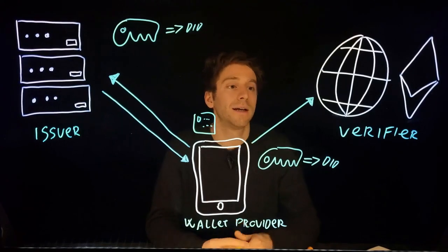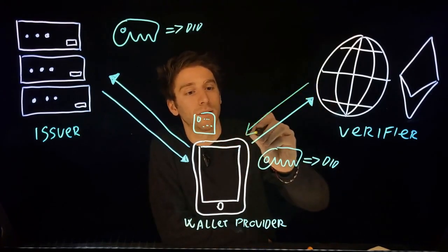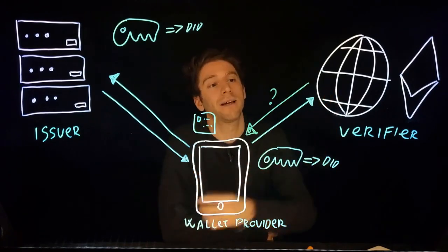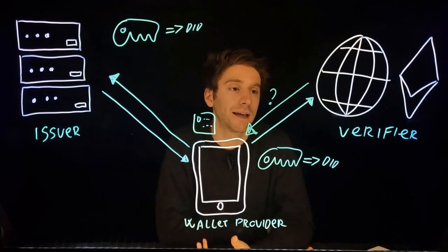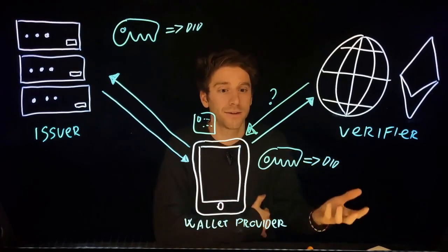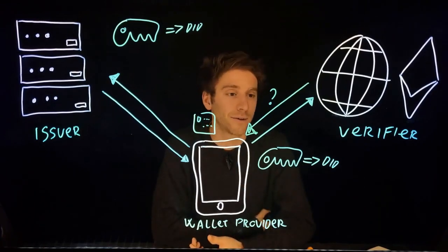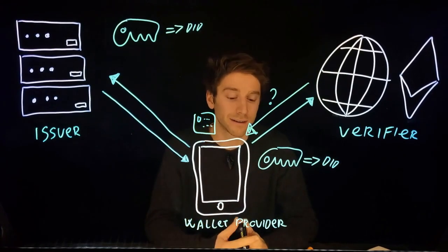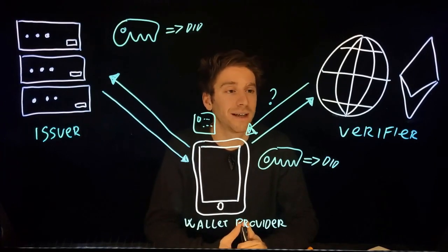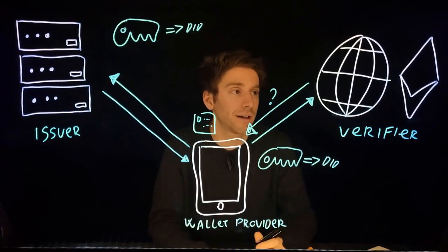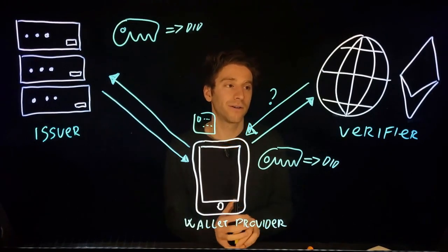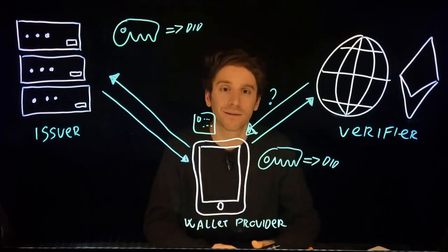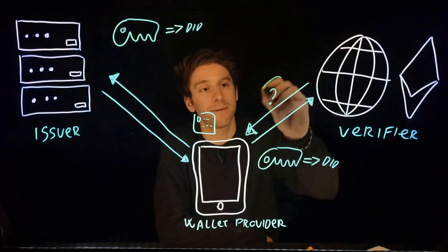The main role of the Verifier SDK starts with setting up a query. A query is a request to satisfy certain criteria for a user. For example, a Web2 social media platform can set up a query asking the user to provide attestation of a certain university degree they obtained. Or it can be a Web3 smart contract asking a user to provide proof that they are part of a specific DAO.